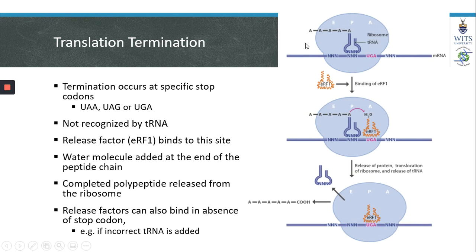Once the peptide chain has fully formed, translation must be terminated in order for the peptide chain to be released from the ribosome. Termination occurs at a specific codon — a three-base sequence called a stop codon. The stop codon usually has the sequence UAA, UAG, or UGA. These stop codons cannot be recognized by transfer RNA because they do not code for any specific amino acid.